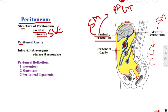Now let's talk about the peritoneal cavity. The peritoneal cavity is this space you can see highlighted in yellow — this big empty space between your parietal and visceral peritoneum. The peritoneal cavity is a potential space that normally contains only a small amount of lubricating fluid.